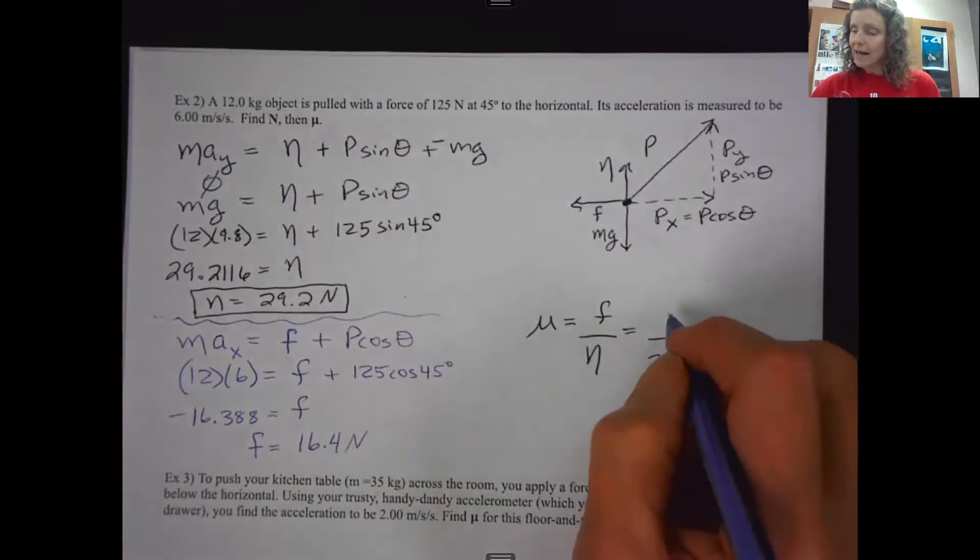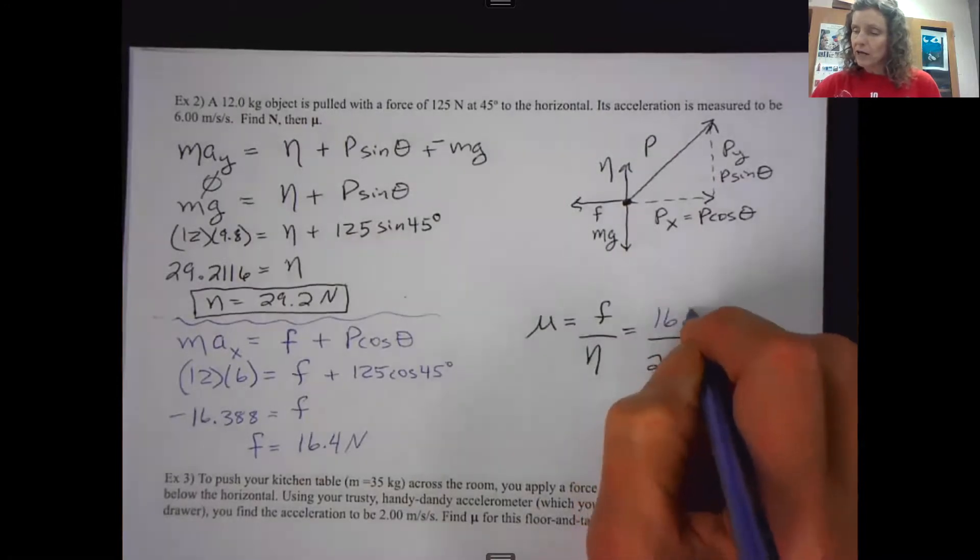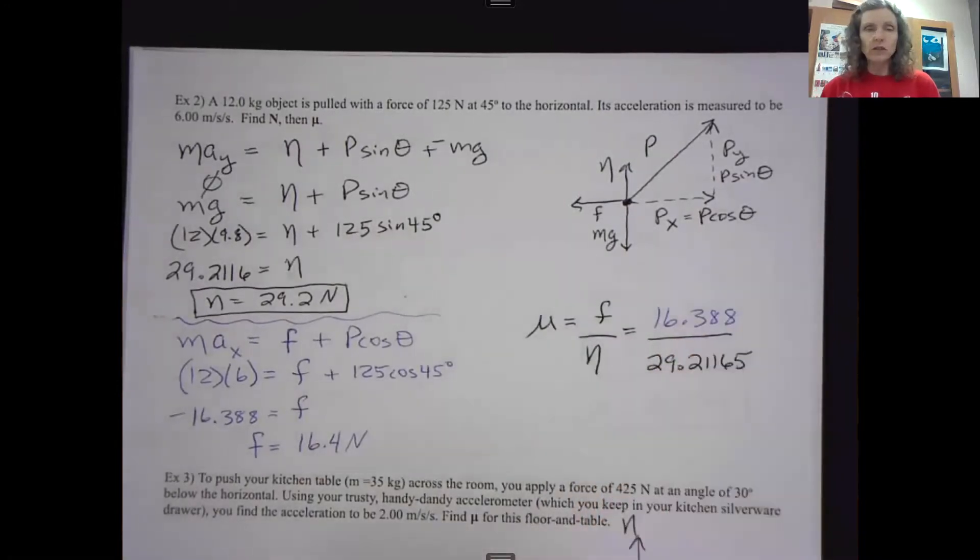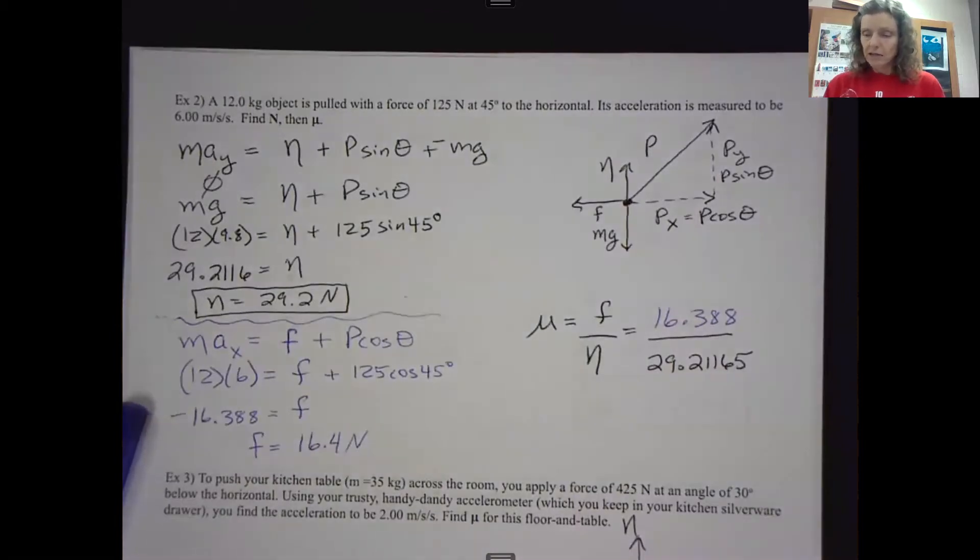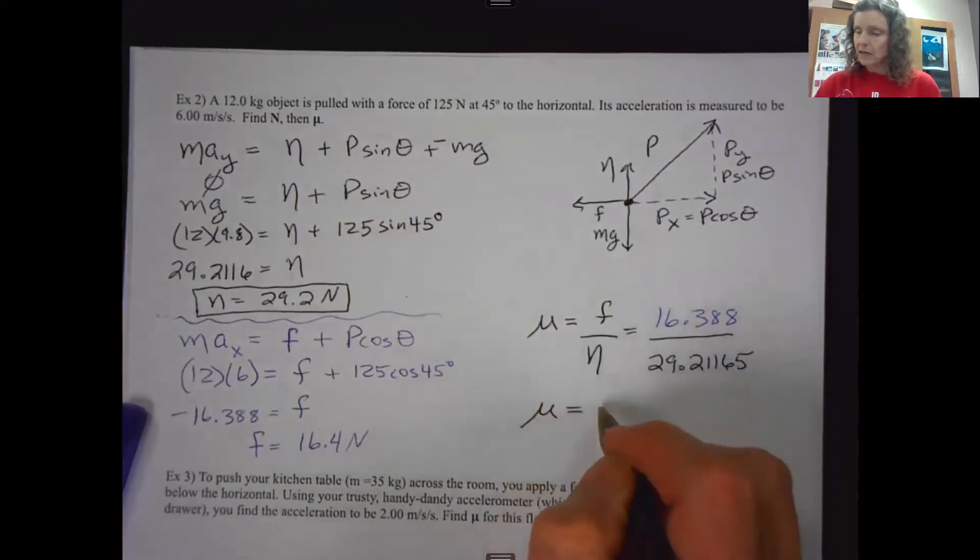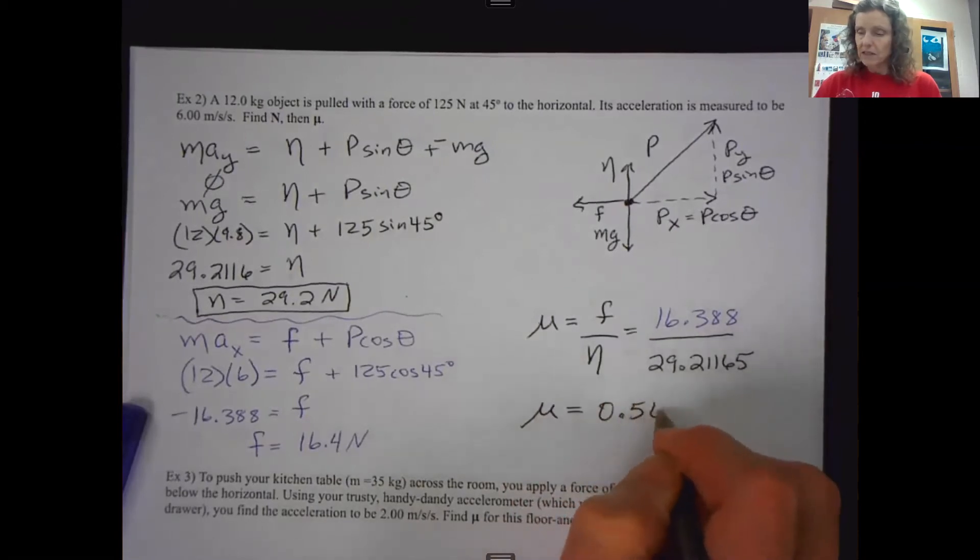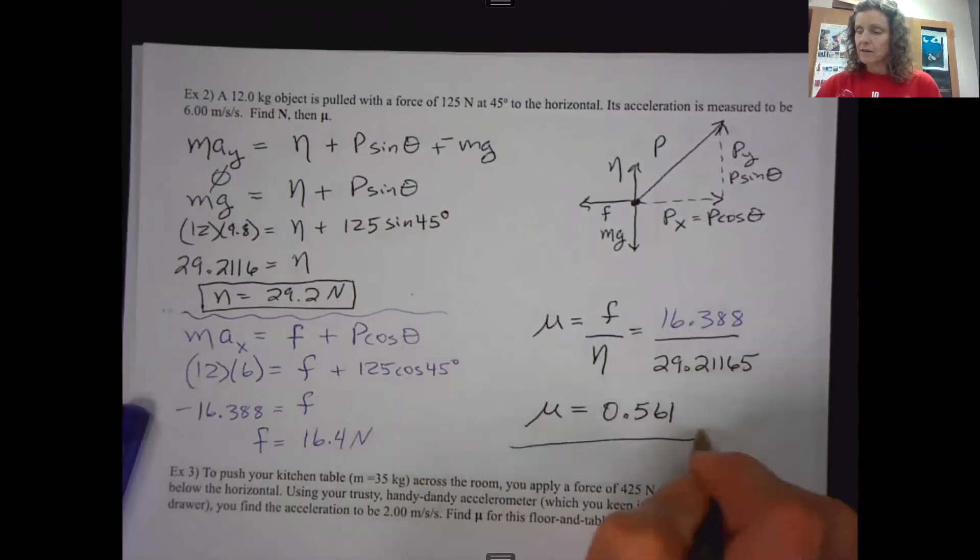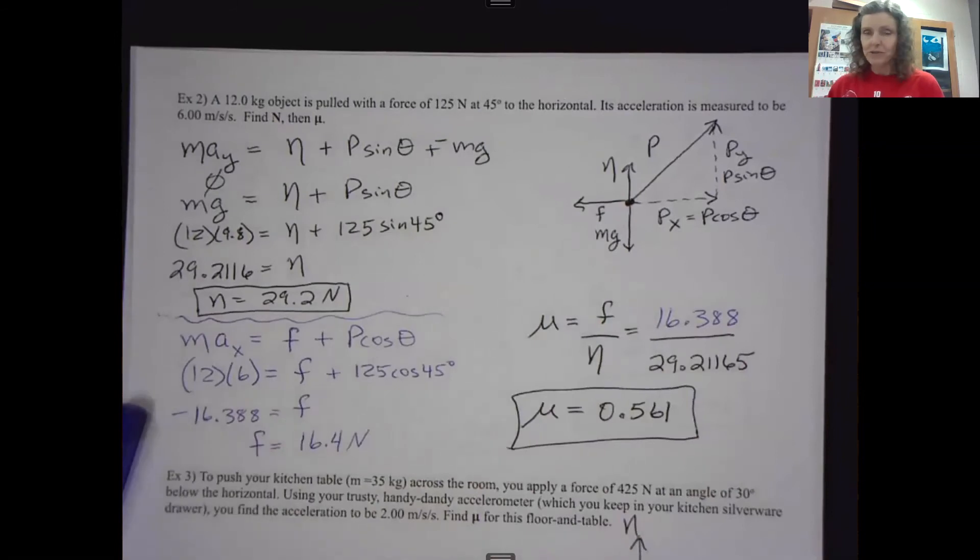So I'm going to take that unrounded number over here. And I'm going to use the absolute value because that's what's used to report coefficients of friction. And I'll divide that number by my normal force. Again, use unrounded numbers in your calculations. And you should get a coefficient of stickiness here of 0.561. And I hope that helps. Good job.